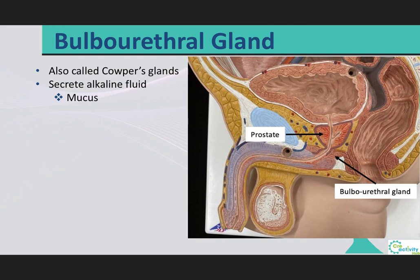Lastly, the bulbourethral glands, also called Cowper's glands, are located at the base of the penis, covered by the fascia of the urogenital diaphragm. They are very tiny rounded glands, only about 10 millimeters in diameter, and their ducts empty into the spongy urethra. These glands secrete a thick, sticky, alkaline mucus that helps neutralize urinary acids remaining in the urethra and provides lubrication for the tip of the penis, which may also aid penetration.